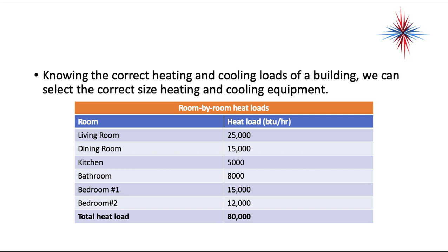What you do is perform a room-by-room heat load calculation. Once you have that laid out, you can determine your total heat load — for example, 80,000 BTUs of heating per hour. You're going to have two columns: a heat load column and a cooling load column. Knowing the correct heating and cooling load of a building allows you to select the correct size heating and cooling equipment.